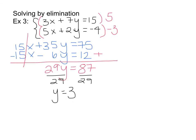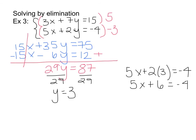Now that I have one variable, I plug it into the first or second original equation — I recommend those since the coefficients haven't been changed. I'll use the bottom equation: 5x plus 2 times 3 equals negative 4. 2 times 3 gives 6, so 5x plus 6 equals negative 4. Subtract 6 from both sides to get 5x equals negative 10, then divide by 5 to get x equals negative 2. The point of intersection is (negative 2, 3).